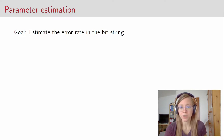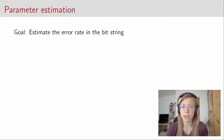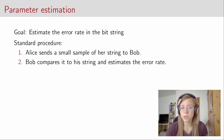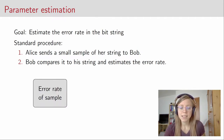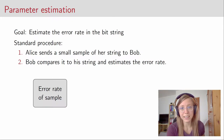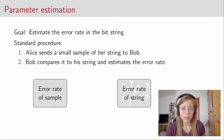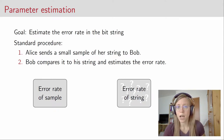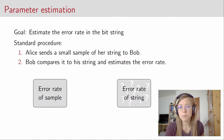The goal of parameter estimation is to estimate the error rate in the bit strings. The standard procedure is: Alice sends a small sample of her bit string to Bob, and Bob compares it to his string and estimates the error rate. They don't want the sample to be too large, because those bits are lost for the key. The intuition is that if the error rate of the sample is small, then the error rate of the remaining bit string is also approximately small.